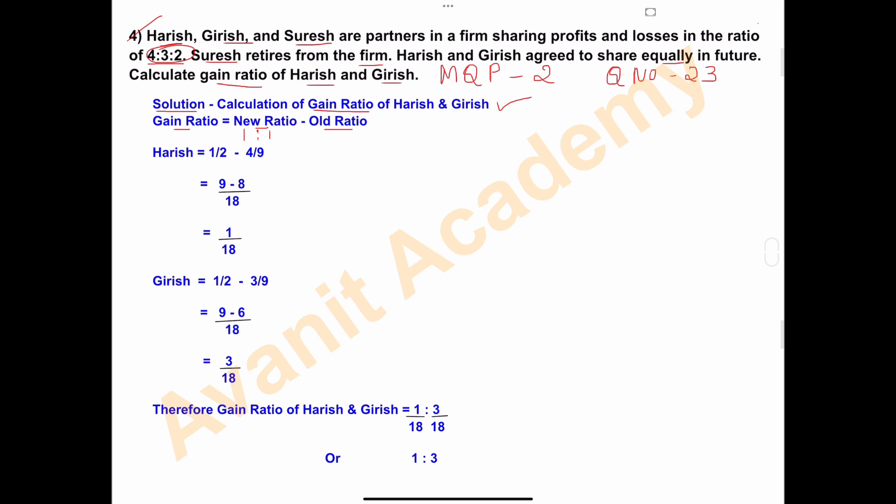Minus old ratio. Old ratio is given in the problem, that is 4:3:2. So this is 1:1, the new ratio, and old ratio of Harish, Girish, and Suresh is 4:3:2.